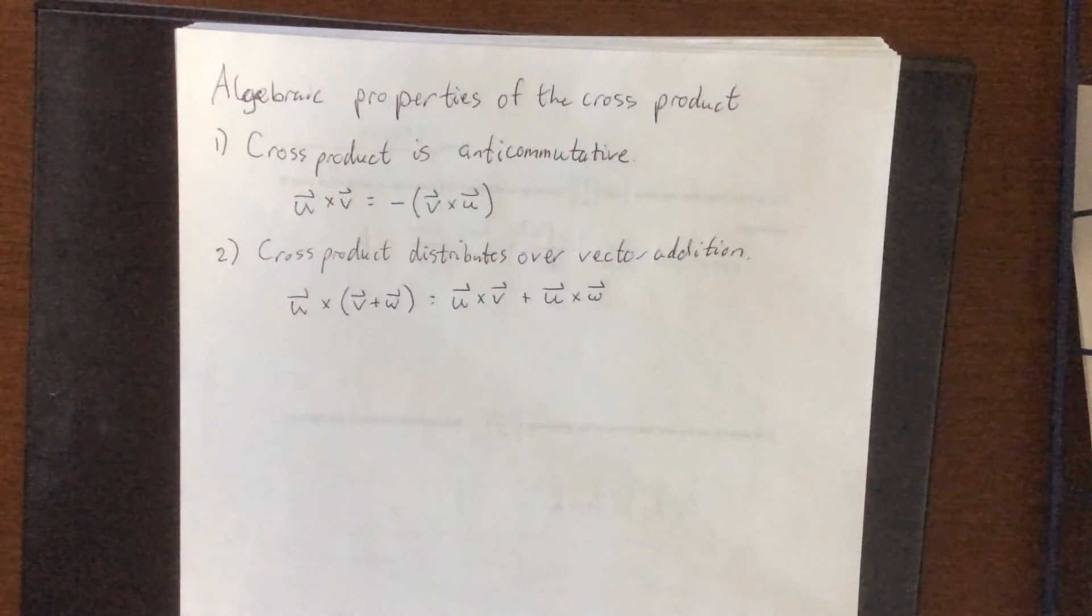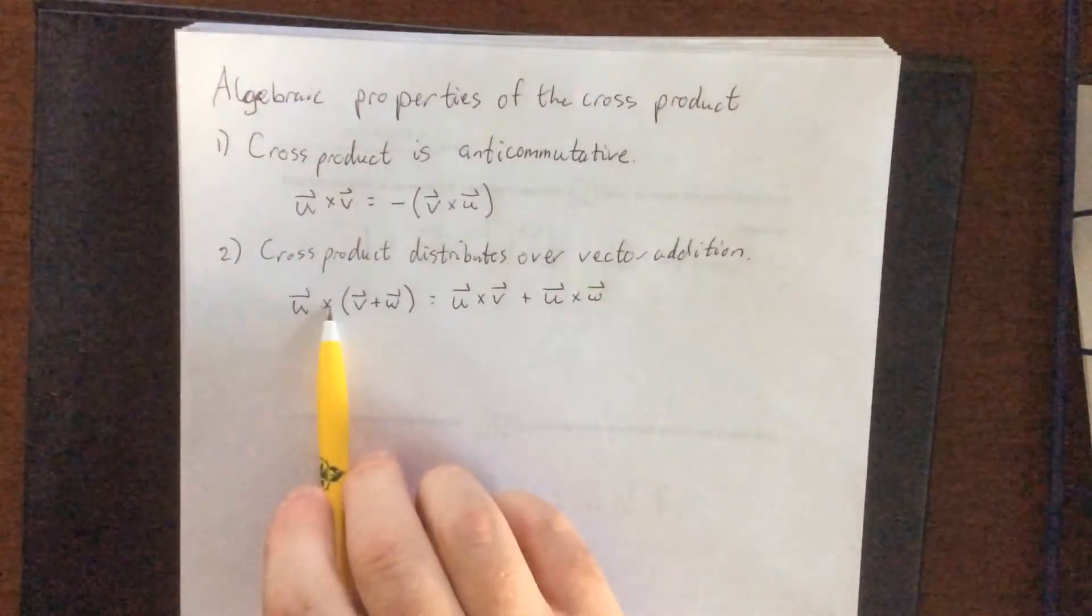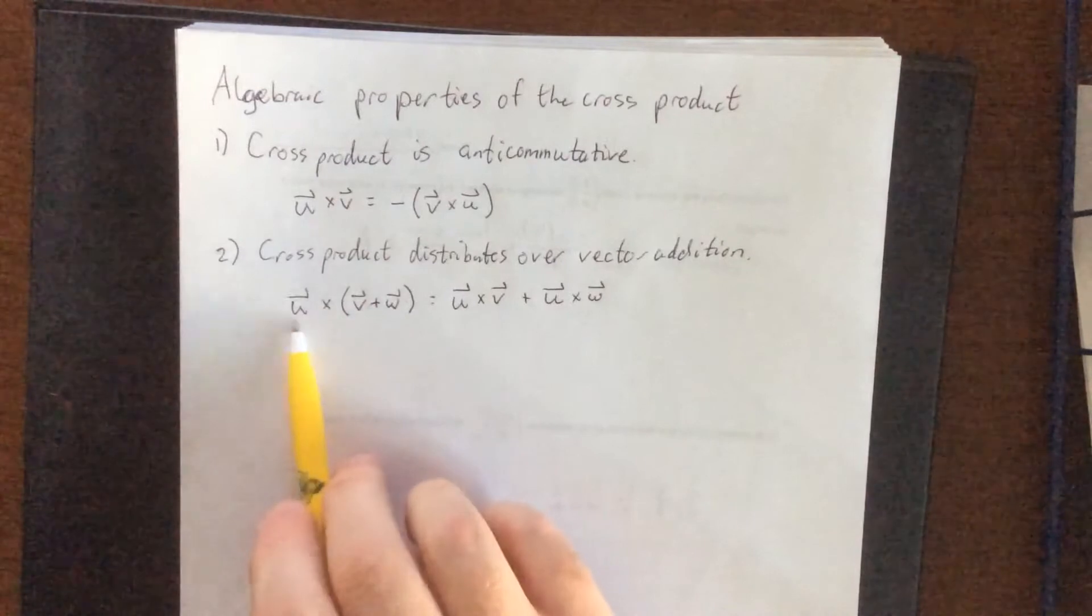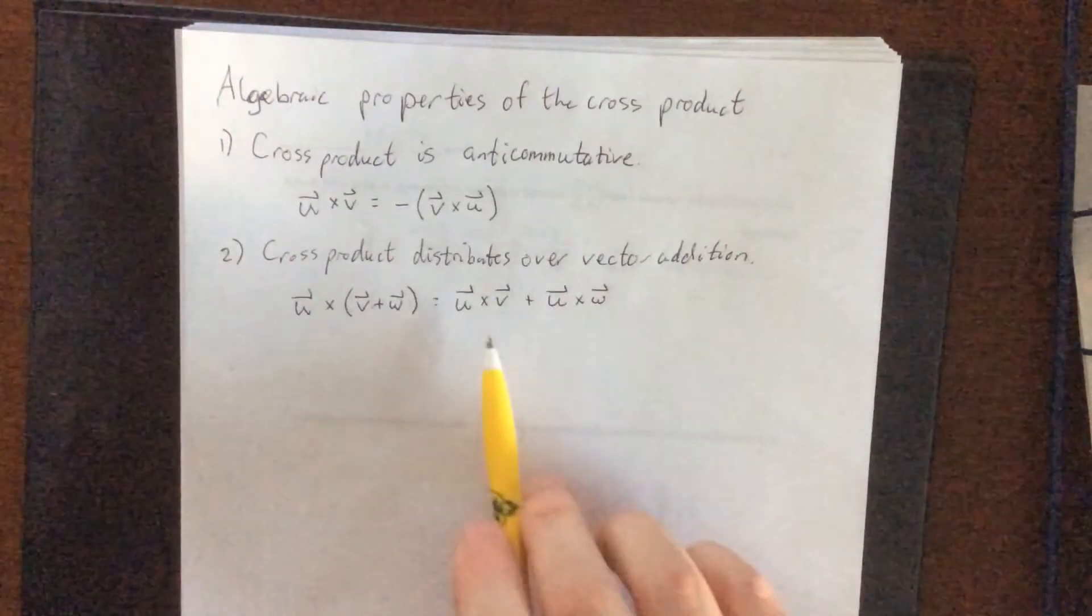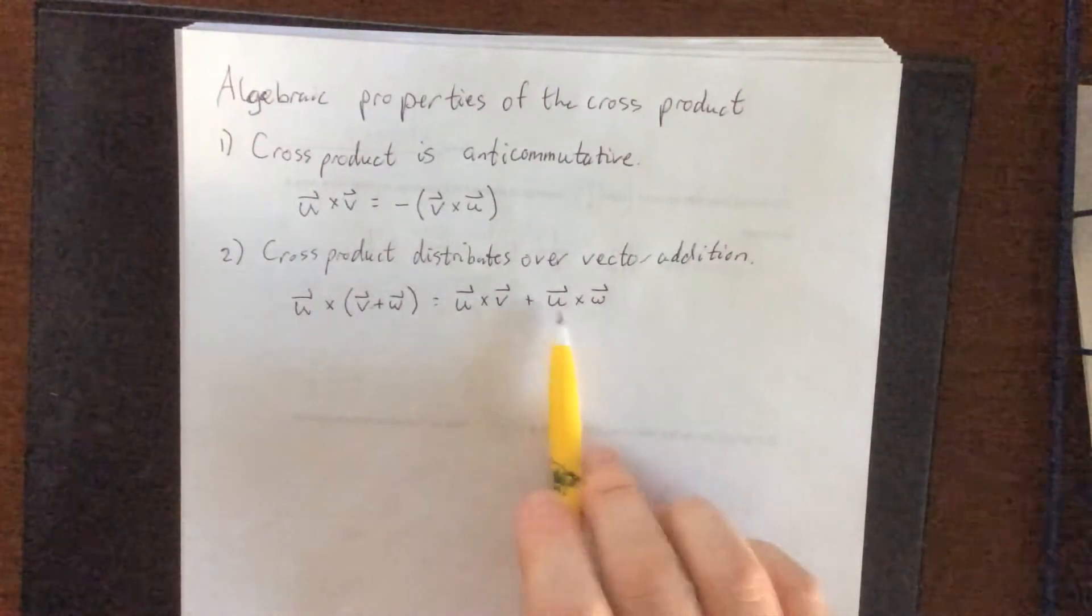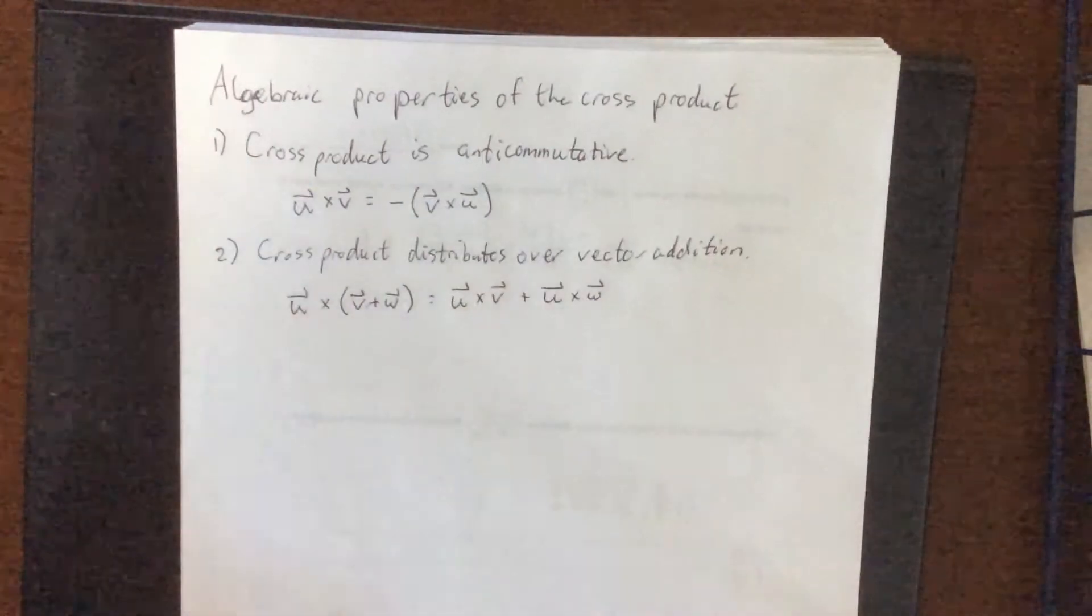Now something important to point out here is that the cross product has the sum of the two vectors on the right and it has the original u on the left. And in both of these, u is on the left and the two vectors that were added are on the right.